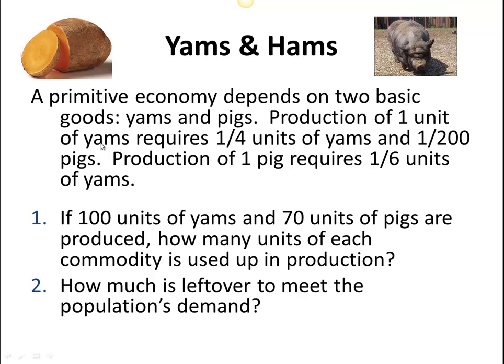To produce one unit of yams, we're going to use up one-quarter units of yams and one two-hundredth units of pigs. When we produce yams, we'll actually be using up some of our yams to do that — we could use them for seeds. Also, the farmer, when growing these things, is going to have to eat, so in the process of growing the yams, we'll actually eat some of them for energy.